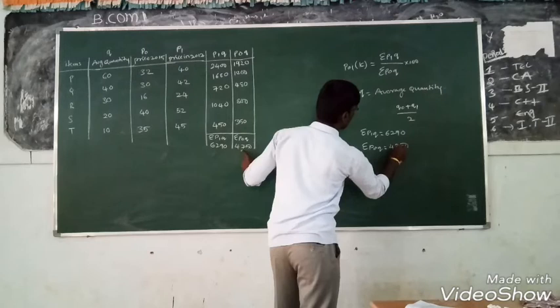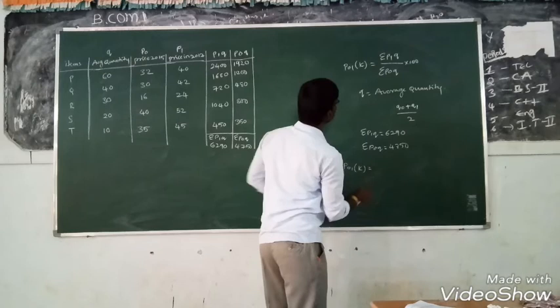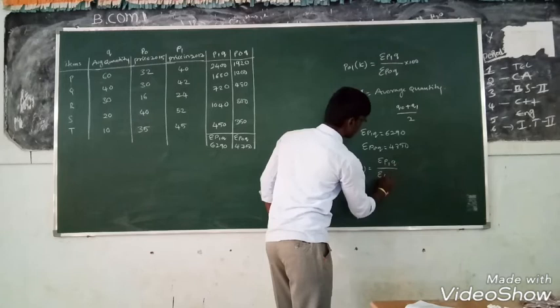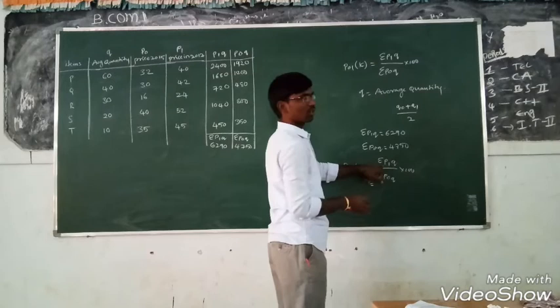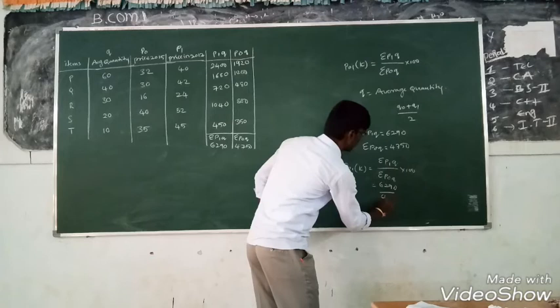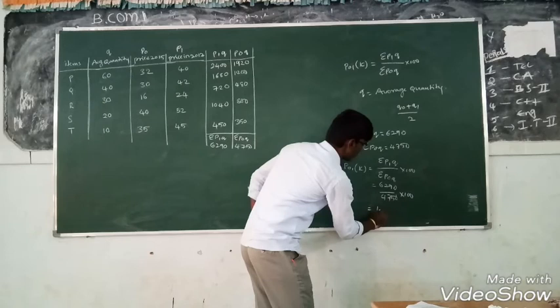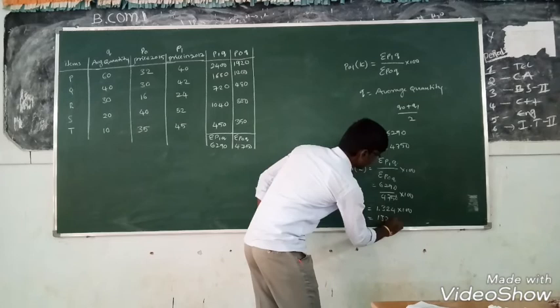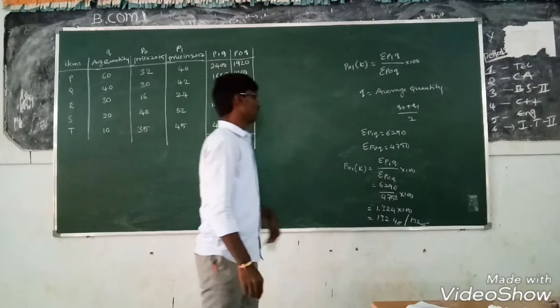Therefore, P01 of Kelly equal to summation of P1 Q divided by summation of P0 Q into 100. Already we have qualified P1 Q value, that is 6290, divided by summation of P0 Q, that is 4750, into 100. That is 1.324 into 100, which equals 132.4, or approximately 132.